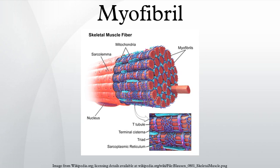When a muscle contracts, the actin is pulled along myosin toward the center of the sarcomere until the actin and myosin filaments are completely overlapped. The H-zone becomes smaller and smaller due to the increasing overlap of actin and myosin filaments, and the muscle shortens. Thus when the muscle is fully contracted, the H-zone is no longer visible. Note that the actin and myosin filaments themselves do not change length, but instead slide past each other. This is known as the sliding filament theory of muscle contraction.